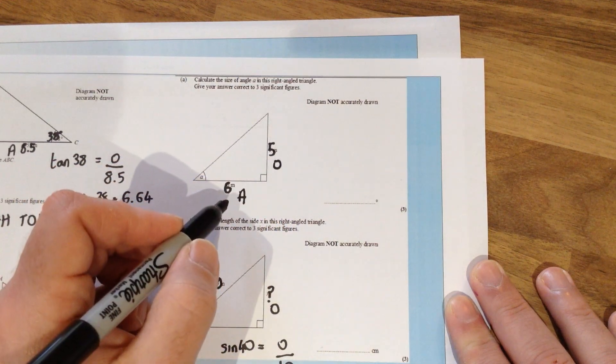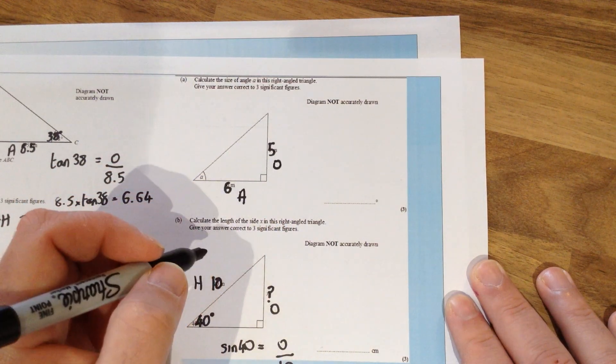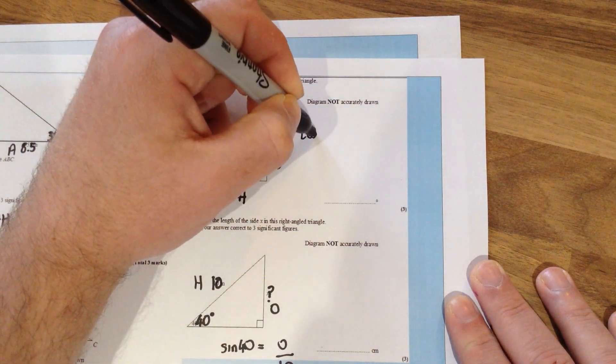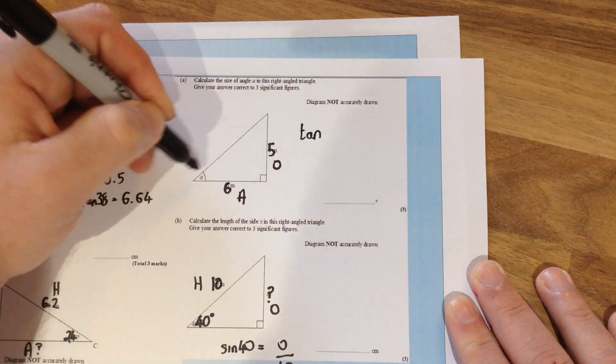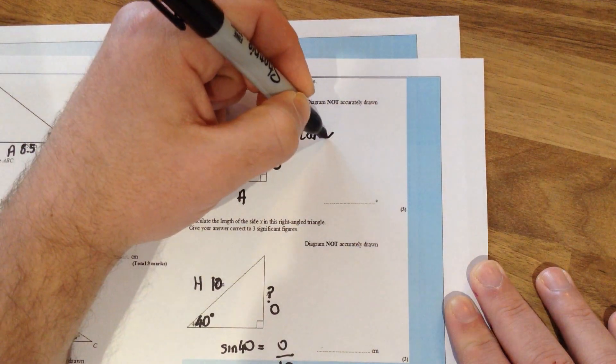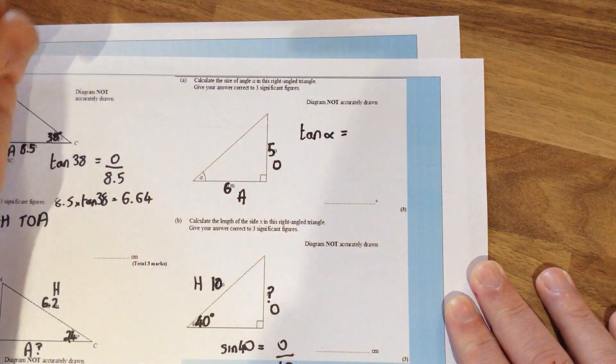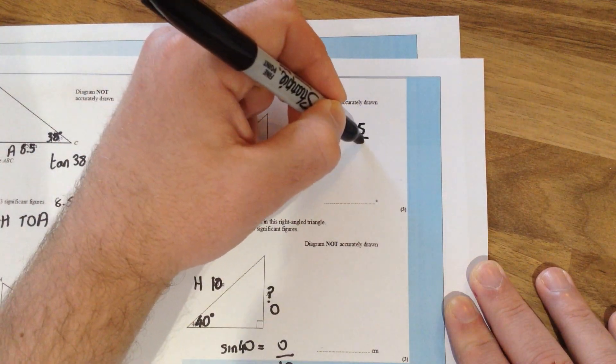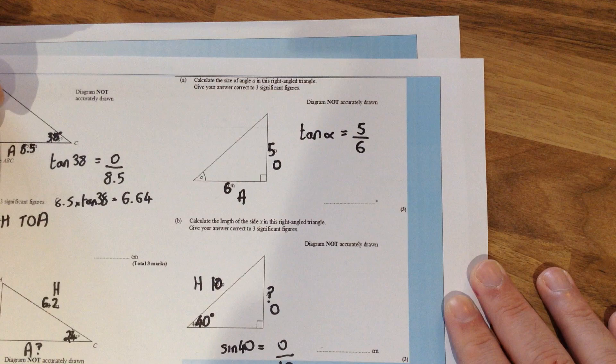O and A, opposite and adjacent, well they're linked by tan. This time we've got the tan of the angle that we don't know what the angle is. So it's just used a symbol. It's alpha. You can use whatever symbol you want. Is equal to opposite over adjacent. So 5 over 6.